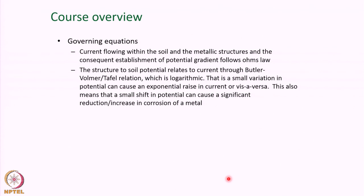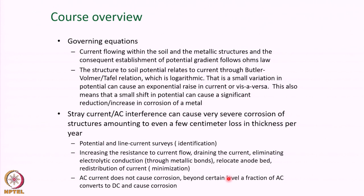The relationship between pipe-to-soil potential and current follows either the Butler-Volmer or the Tafel relationship, which is logarithmic in nature. This means even a small variation in potential can cause an exponential shift in current density and vice versa. A small shift in the applied potential on the metal surface can either increase cathodic protection or, if insufficient, undermine it.